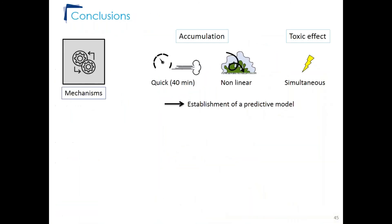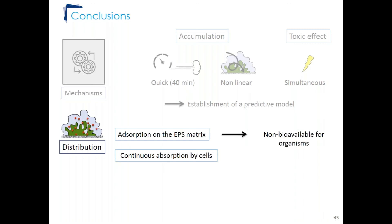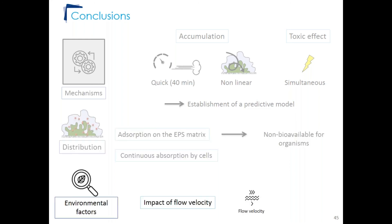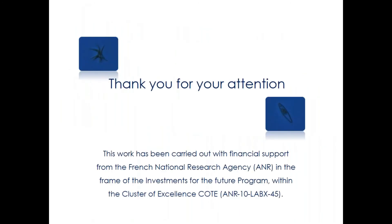In conclusion, throughout the thesis different mechanisms were highlighted: quick accumulation in the biofilm, non-linear bioaccumulation, and toxic impact simultaneous with accumulation. A predictive model was established. The diuron distribution in the biofilm was determined: absorption occurs on the EPS matrix, and diuron accumulated on this matrix was not bioavailable to microorganisms. Continuous absorption by the cell was also observed. Finally, the impact of flow velocity on diuron bioaccumulation was highlighted.